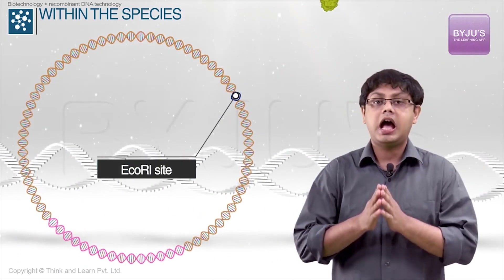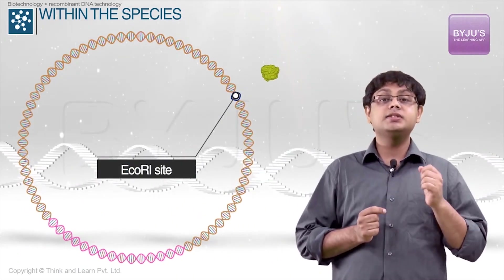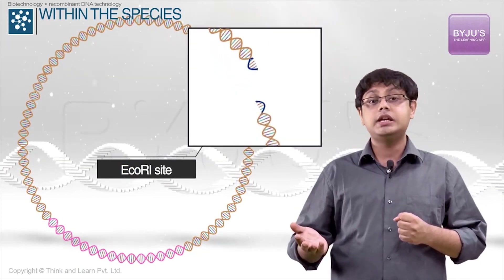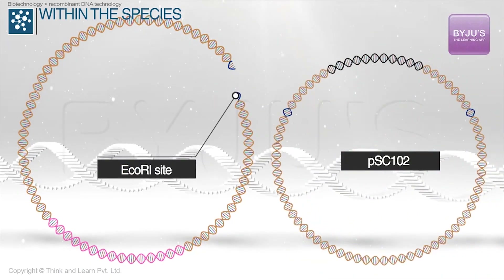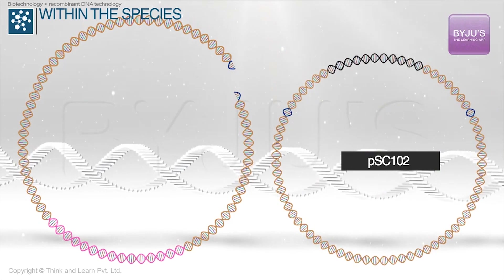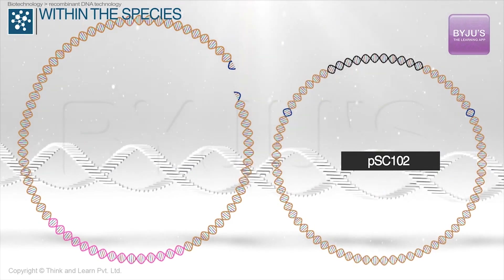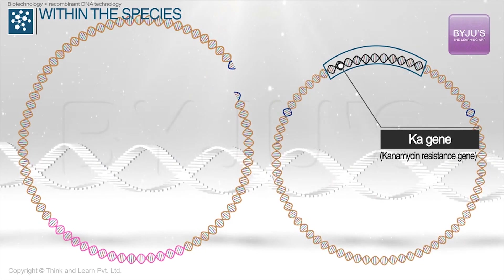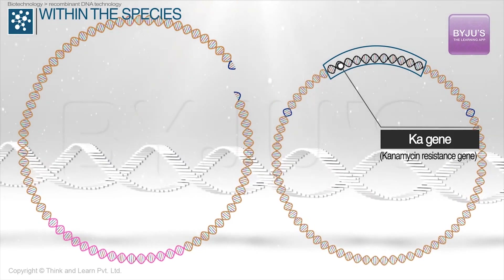ECO-R1 originates from E. coli, and the cutting process turns the plasmid DNA ring into a structure with sticky ends. Cohen used ECO-R1 to cut another plasmid derived from E. coli that carries the resistant gene to canamycin, represented as the KA gene here.